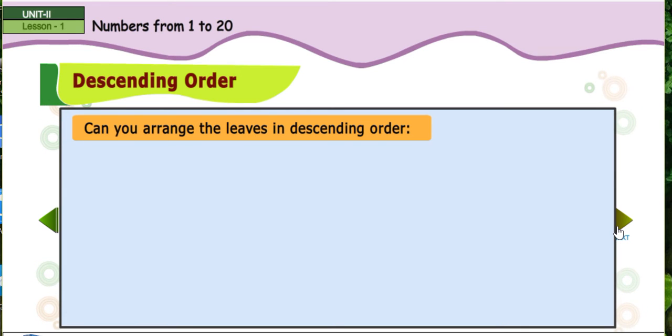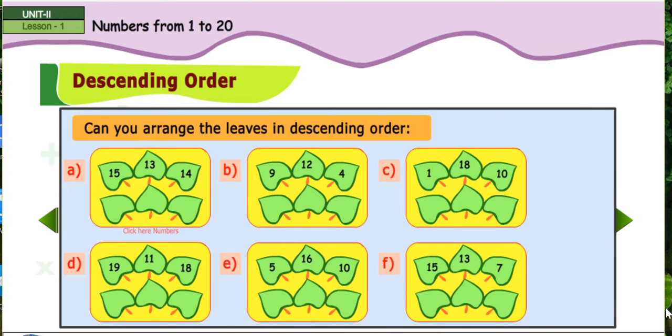Can you arrange the leaves in descending order? Fifteen. Fourteen, thirteen. Twelve, nine, four, eighteen, ten, one. Nineteen. Eighteen, eleven, sixteen. Eleven, sixteen, five, fifteen. Thirteen, seven.